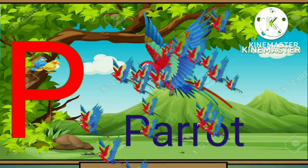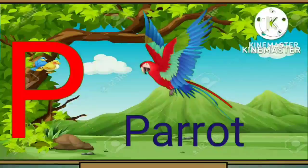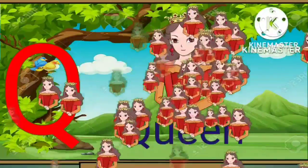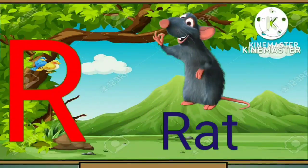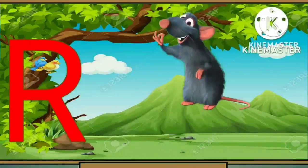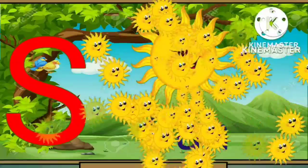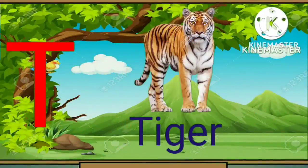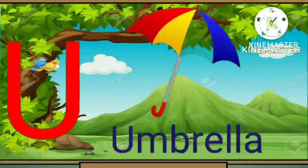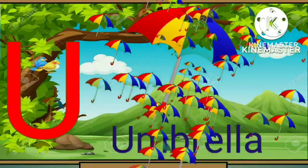P for parrot. Q for queen. R for rat. S for sun. T for tiger. U for umbrella.